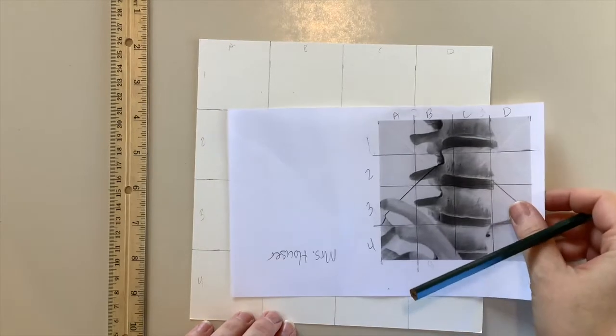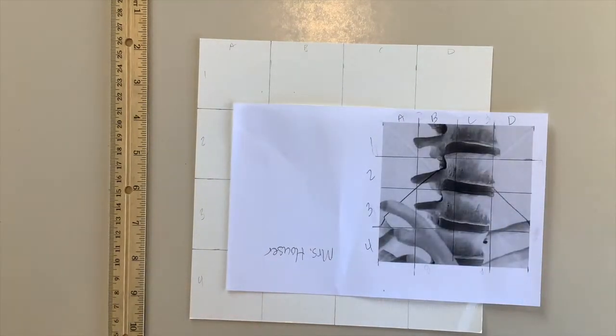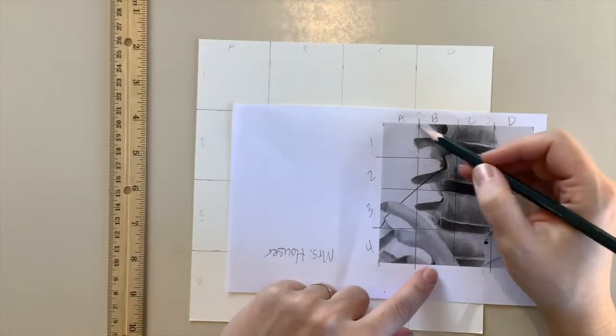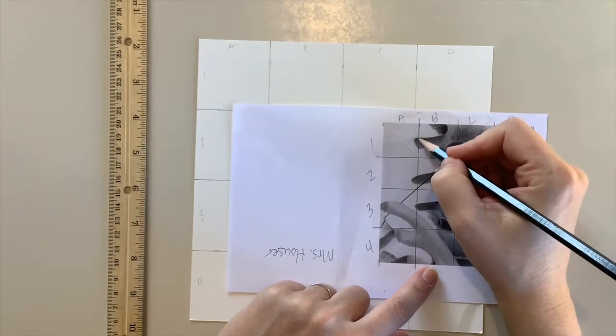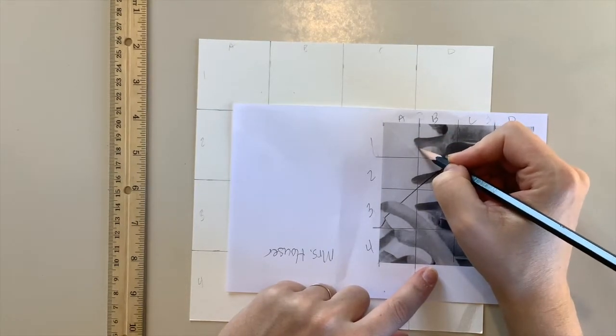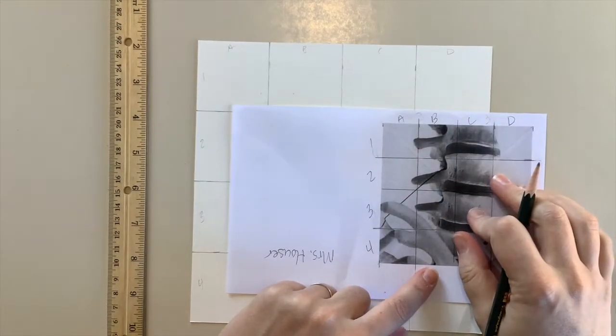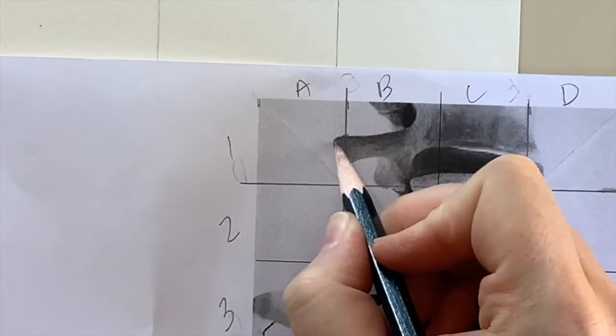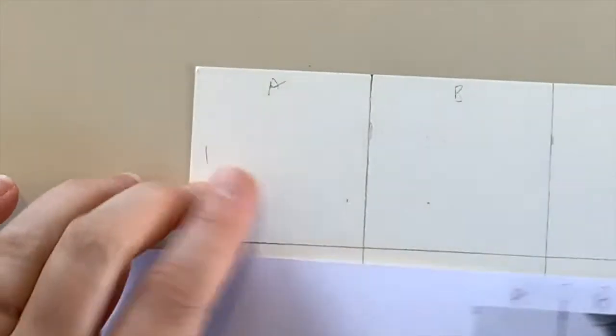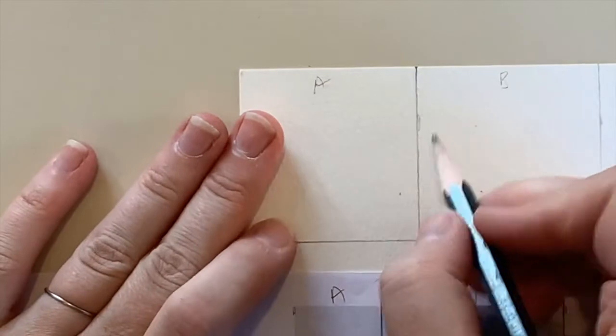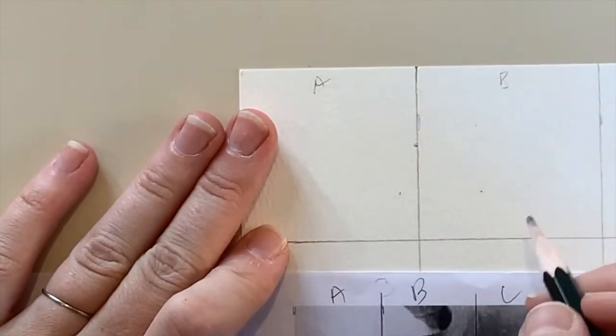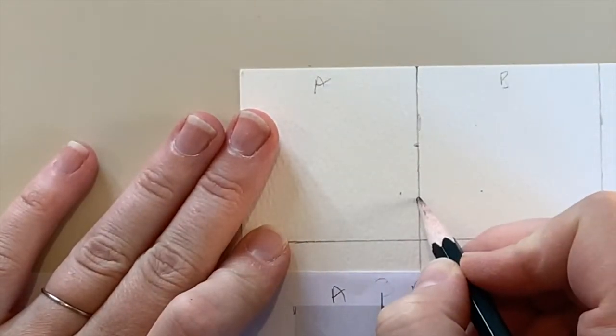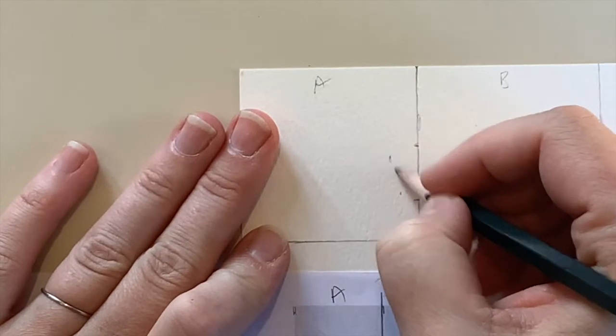Let's get started now transferring our reference photo onto our larger grid. The basic concept is to draw what you see in each box and transfer what you see from that box in the reference image to the larger box. I much prefer using a connect-the-dot method. I'm making tick marks on my reference image. I'm going to transfer those tick marks onto my larger image where I see them first, and then draw the lines that I see to connect them.